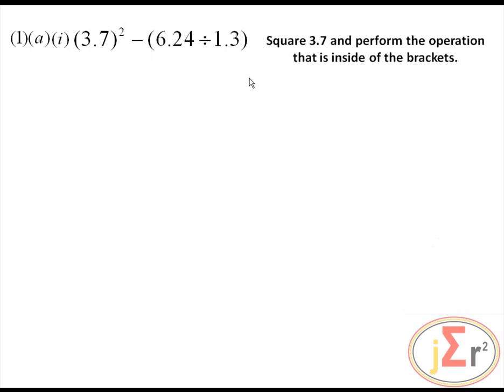Square 3.7 and perform the operations inside the brackets — divide 6.24 by 1.3. Squaring 3.7 gives 13.69, and dividing 6.24 by 1.3 gives 4.8. Then performing the subtraction operation, the result is 8.89.